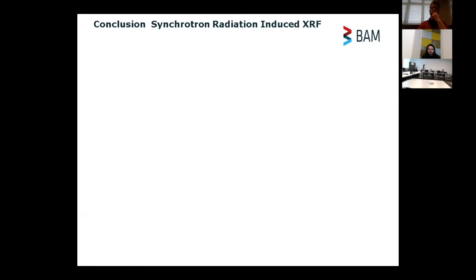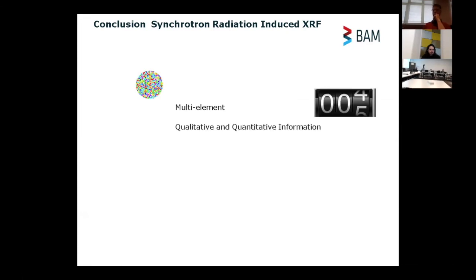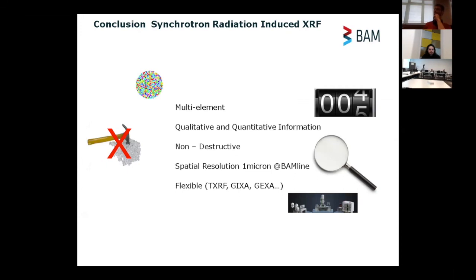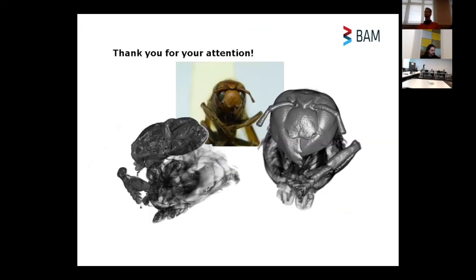This is coming to the end of my talk. I hope I have shown you we have a multi-element method, we can measure multi-element at the same time. We got qualitative and quantitative information. We are non-destructive, which is important sometimes. We have good spatial resolution, one micrometer at the BAM line. It's very flexible. We can make total reflection to get better detection limits, grazing incidence, grazing accident, XANES, EXAFS, a lot of variations. And it's important, if you're going to do it some day in your career, it's free if you don't buy the proposal. With this 3D image of our net, I want to say thank you to all of you for listening all the time. If there's any questions, I'm happy.